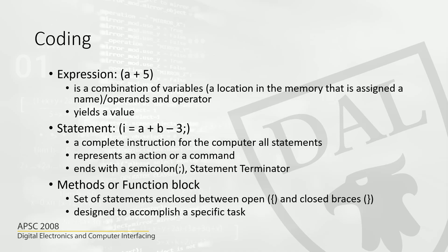We also have something called a statement. A statement is a complete instruction for the computer. A statement should always end with a semicolon — a semicolon is a statement terminator. In more advanced languages like Python, we don't use this statement terminator anymore. But C, although it's a high-level language, is a more structured, conventional kind of programming, so we use a semicolon. If you don't use a semicolon after each and every statement, you will have an error. Every statement should end with a semicolon.